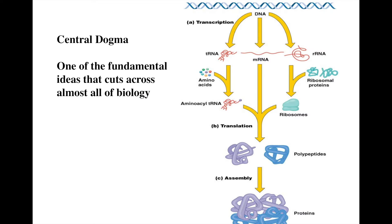This is podcast number 26. We've been talking about duplicating DNA, and the next step in our discussion is to talk about transcription and then translation after that. This is all part of the central dogma — one of the fundamental ideas that cuts across almost all of biology: DNA codes for RNA, RNA codes for protein.